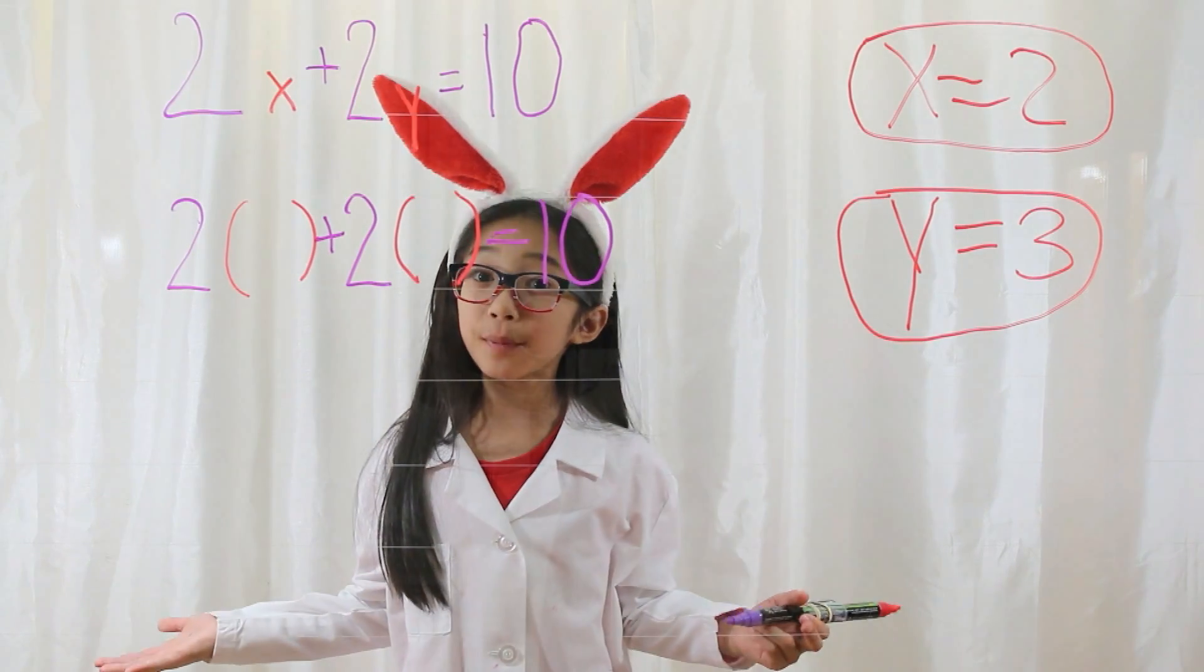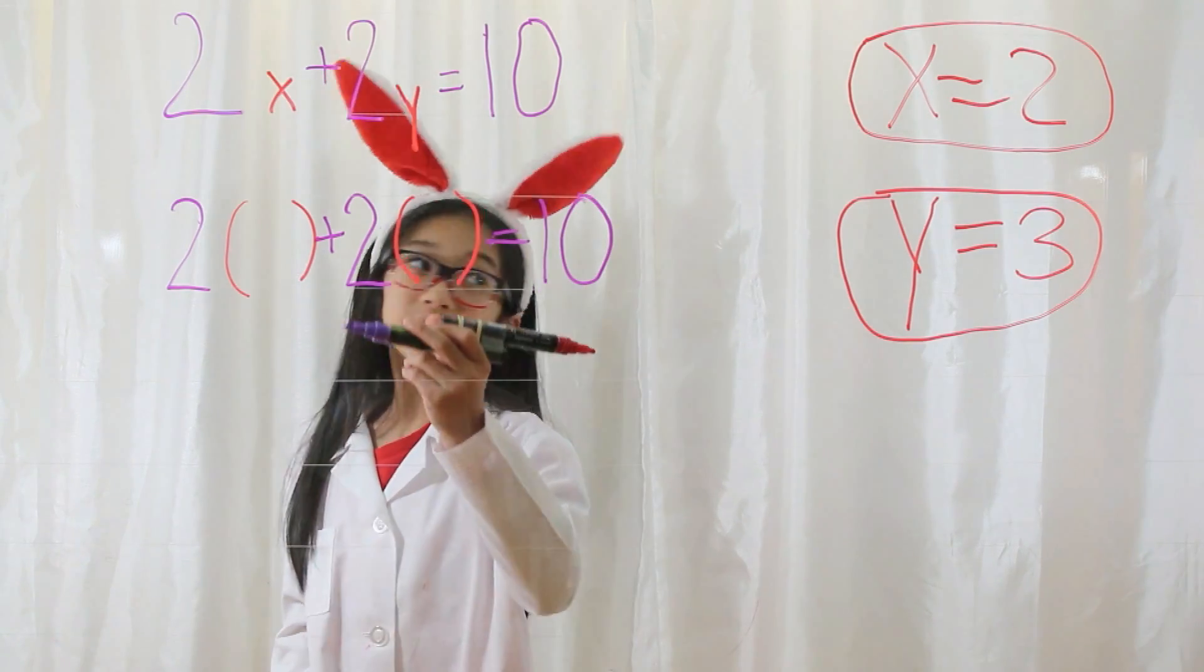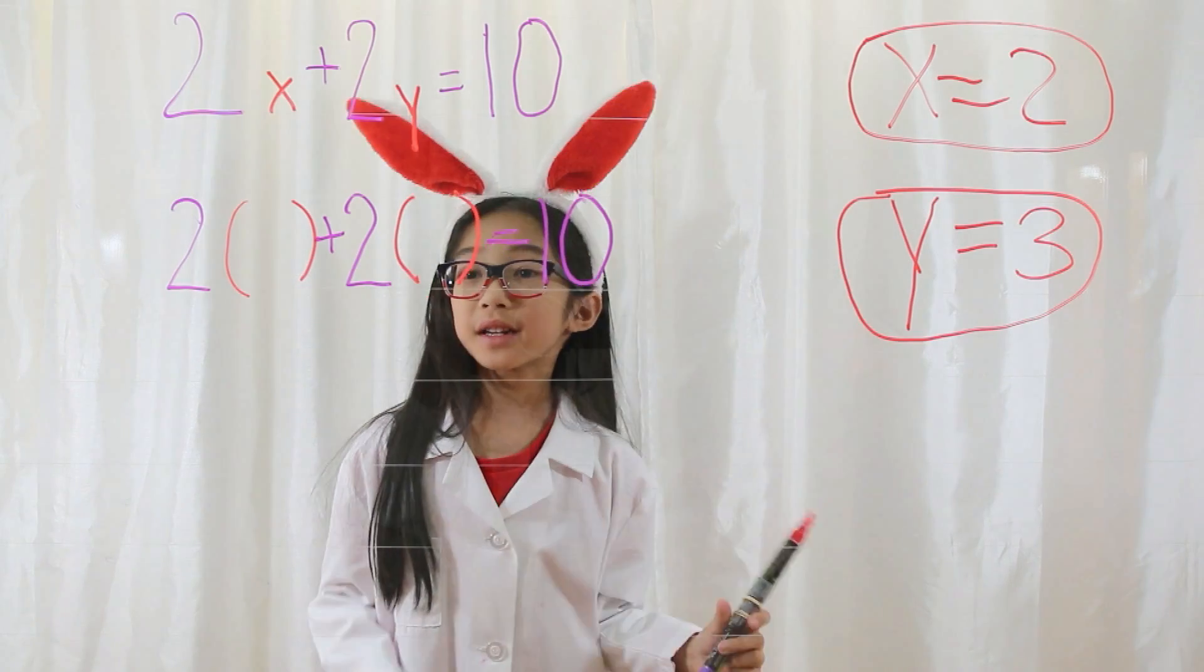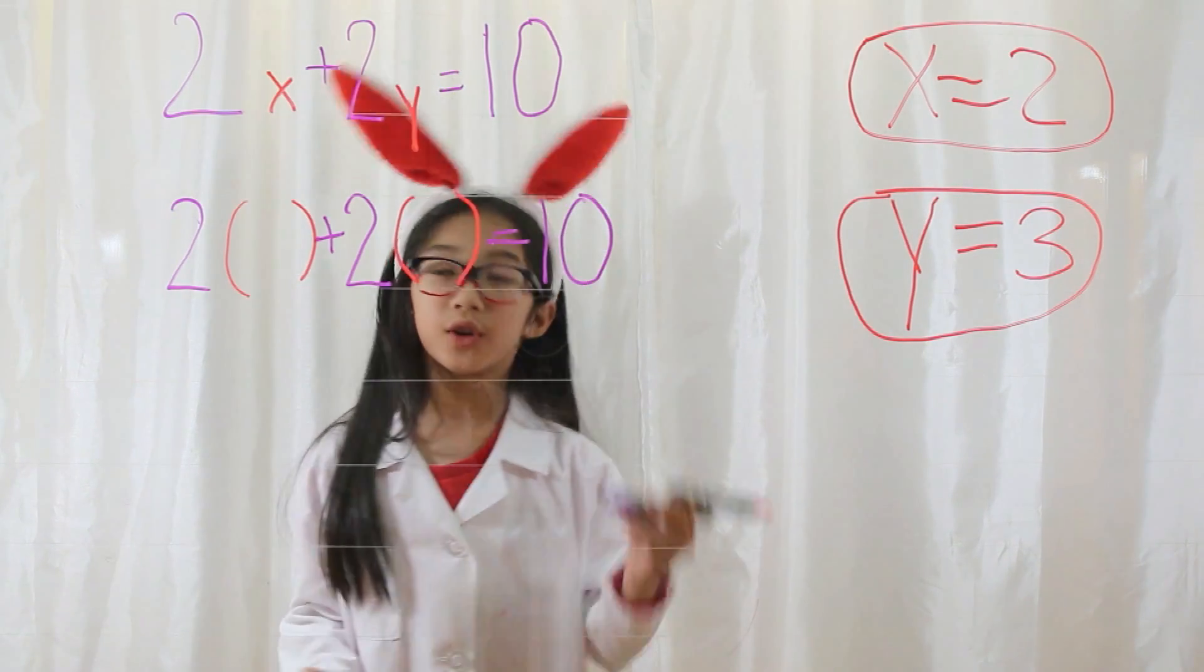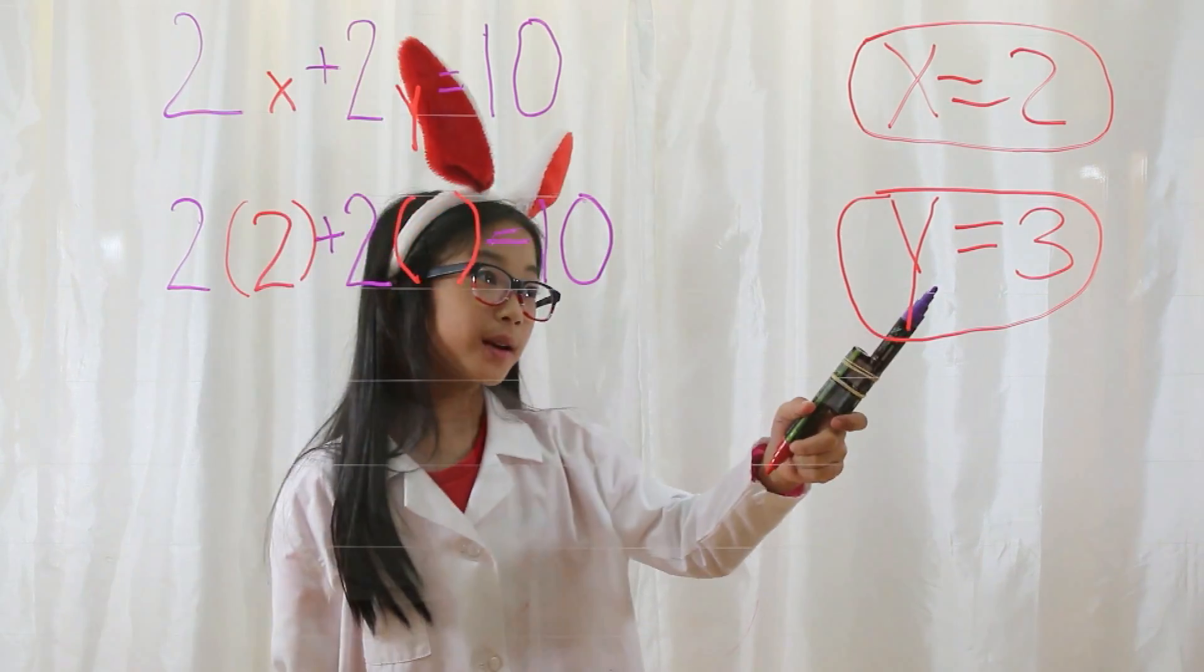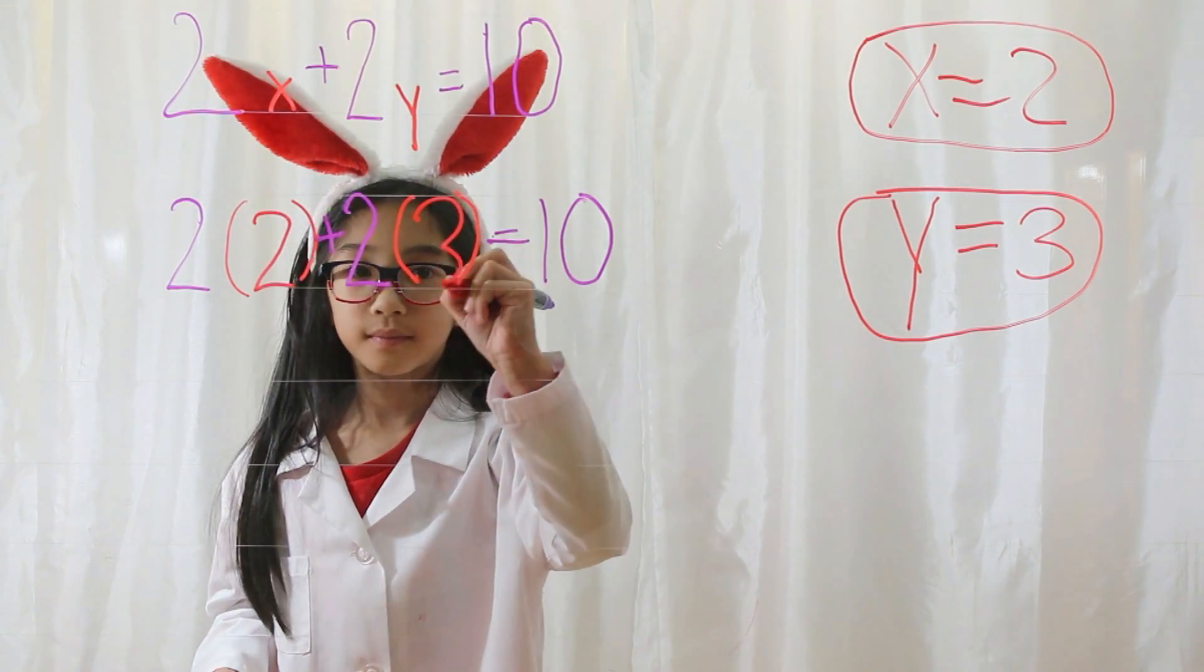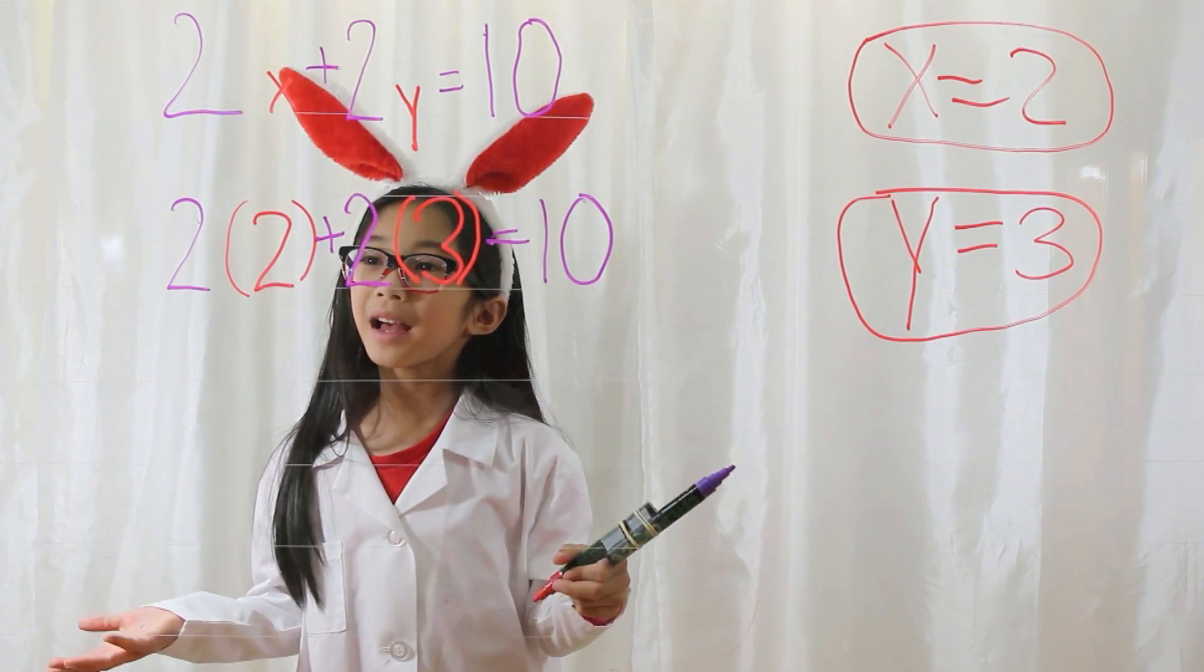What goes in the parentheses? Whatever equals the variable. So in the x parentheses you'd put a 2 because x is equal to 2. And in the y parentheses you'd put a 3, which is equal to 3. Now multiply it out.